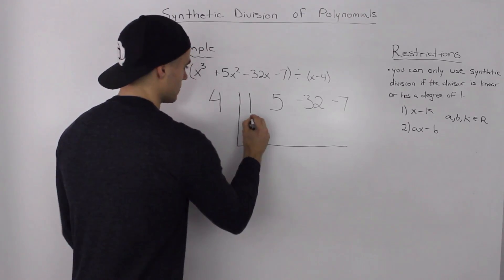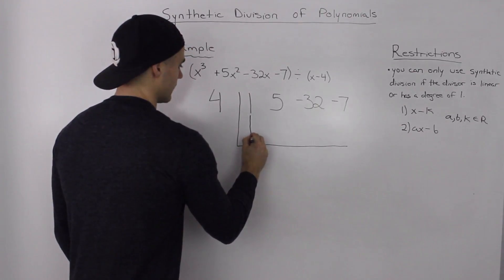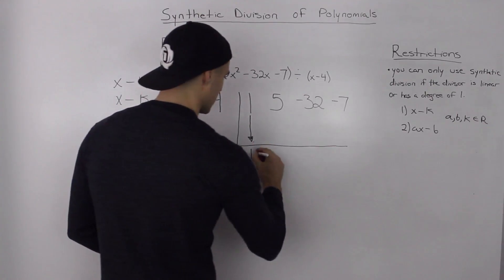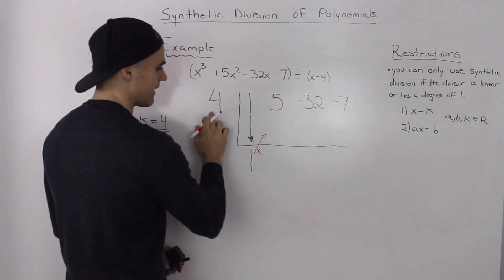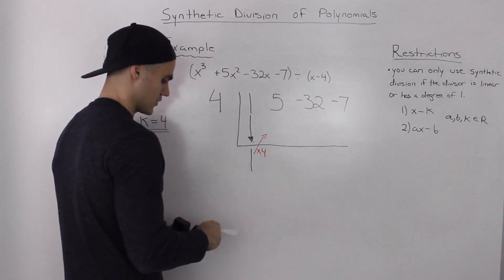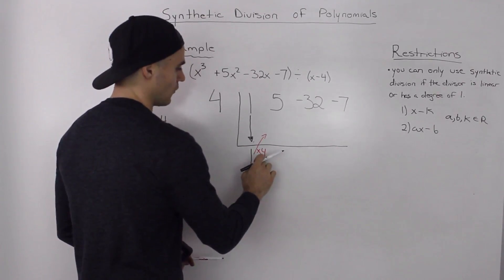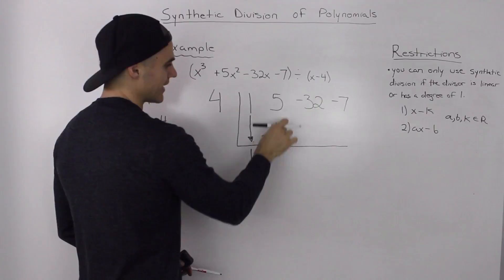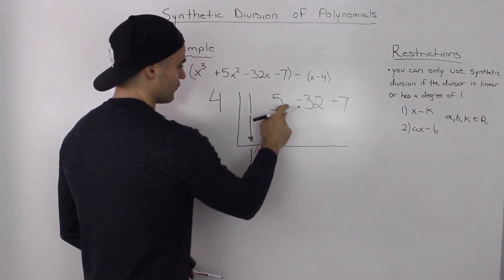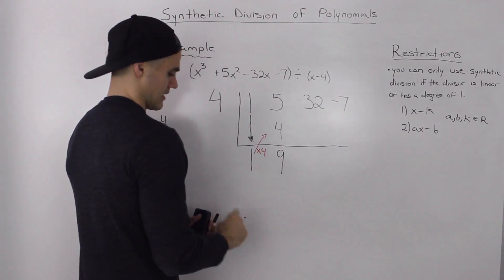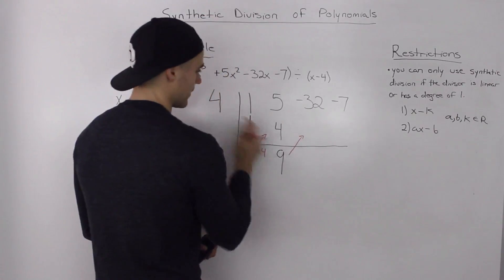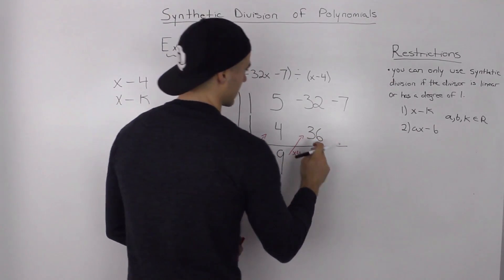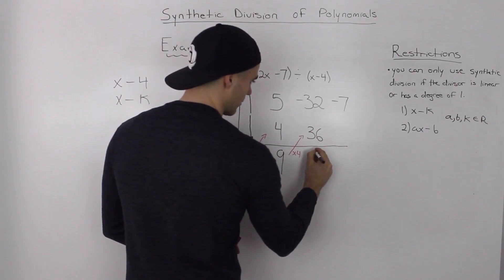The first thing you always do is bring the first term down — so under the line we write 1. Then you take that term and multiply it by the K value of 4: 1 times 4 gives us 4. Then you add those two numbers together: 5 plus 4 is 9. Same thing — you take this 9, multiply it by the K value of 4: 9 times 4 is 36. Then negative 32 plus 36, you add them, and you get positive 4.